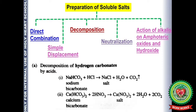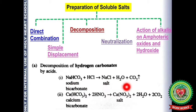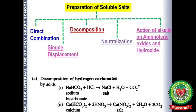The next method is decomposition, where a single reactant decomposes to give two or more products. The first type is decomposition of hydrogen carbonates by acid: metal hydrogen carbonate + acid → CO₂ gas + salt + water. Whenever you have carbonates or hydrogen carbonates, the gas evolved is CO₂. The salt formed corresponds to the acid used — if HCl is used you get a chloride; if nitric acid is used, the salt is a nitrate, for example calcium nitrate.